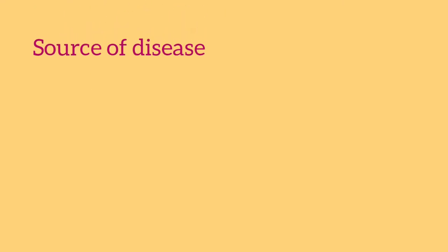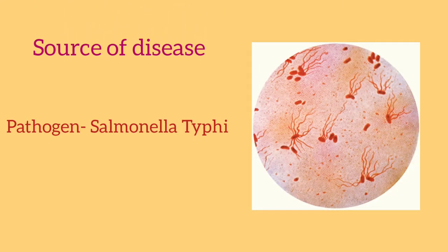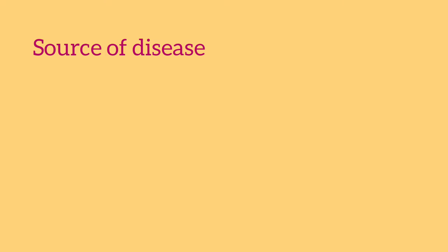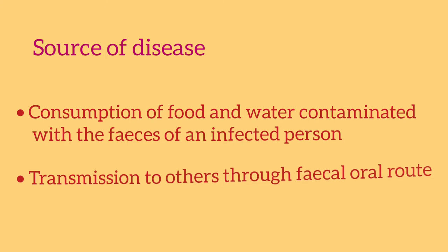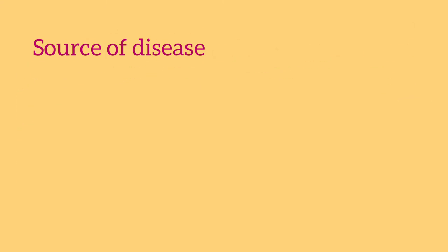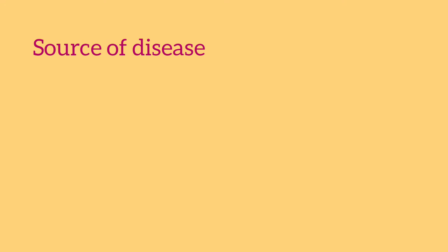Typhoid is caused by the pathogen Salmonella typhi, which spreads through contaminated water. Water gets contaminated with the feces of an infected person. The pathogen from contaminated water may further travel through flies from the sewage to food or water, and will finally infect directly through persons handling food and water, causing the disease.